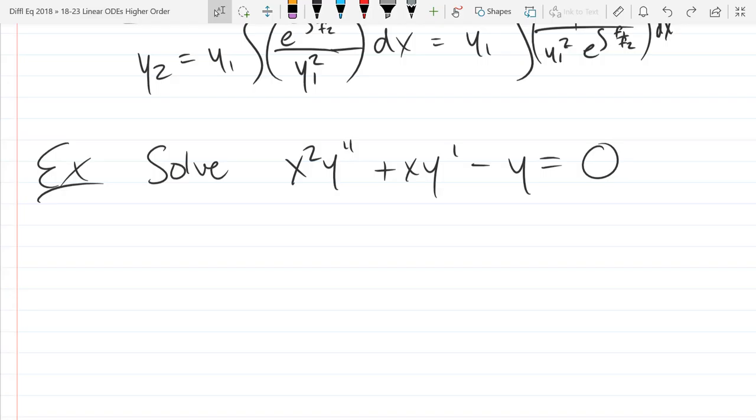It's not linear homogeneous, not variation of parameters. Everything else we learned was for order one ODE. How do you know it's not order one? Just got a second derivative. So all that order one stuff, useless here.